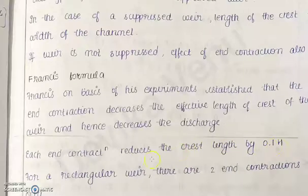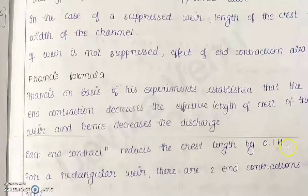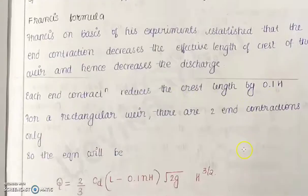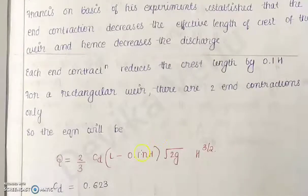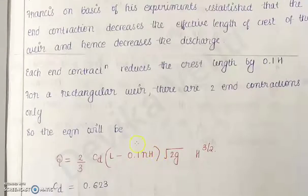Each N contraction reduces the crest length by 0.1 × H. So the crest length is reduced by 0.1H per contraction. If there is only one side, 0.1H is reduced; if there are two ends, the reduction is 2 × 0.1H. The number of N contractions times 0.1H gives the total reduction in crest length.